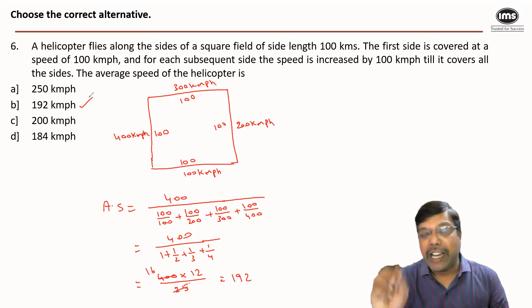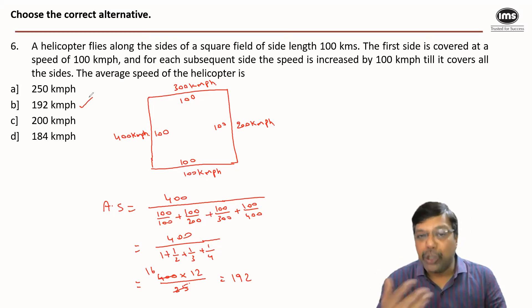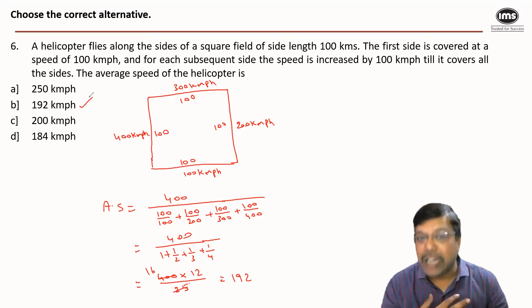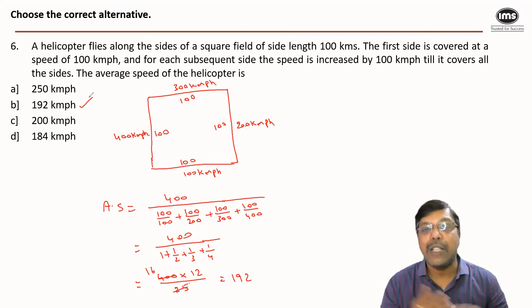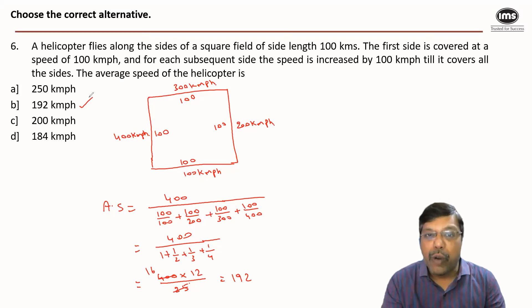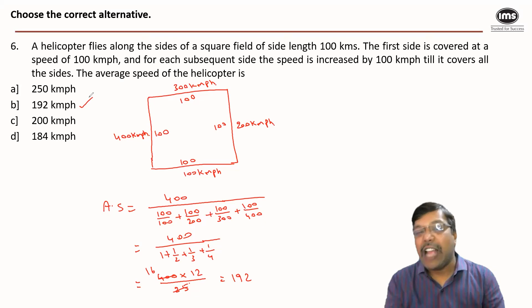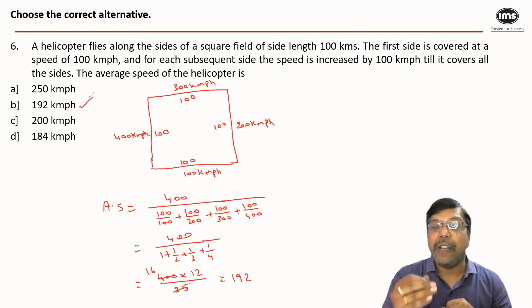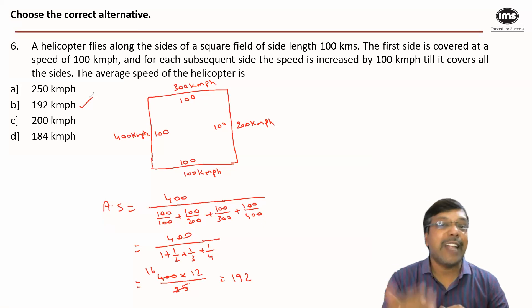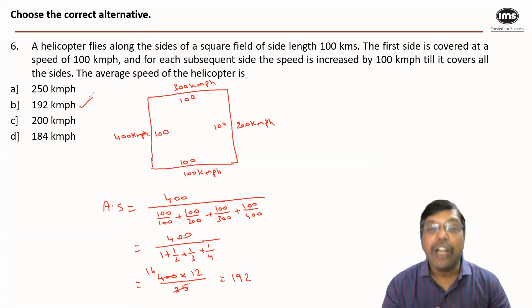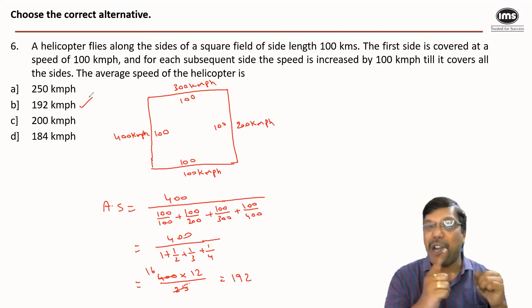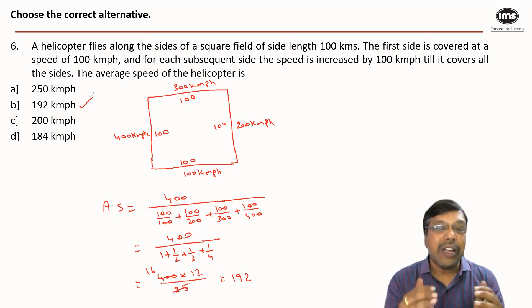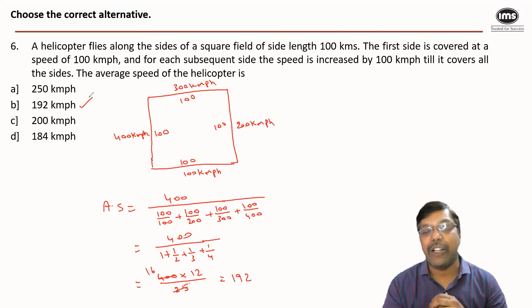Time, speed, and distance is a topic which most students find difficult and time-consuming. But this question is one of those straightforward questions based on the very simple concept of average speed. It's very important that you judge the difficulty level of a question and decide whether to attempt it — not by how it looks or what topic it belongs to, but by how difficult the question actually is.